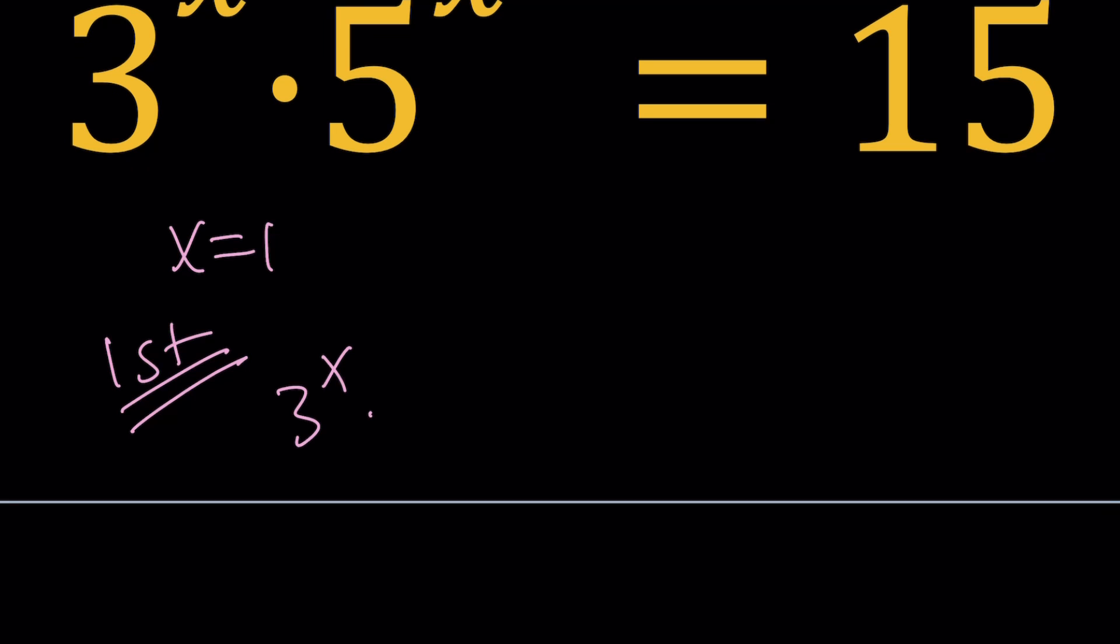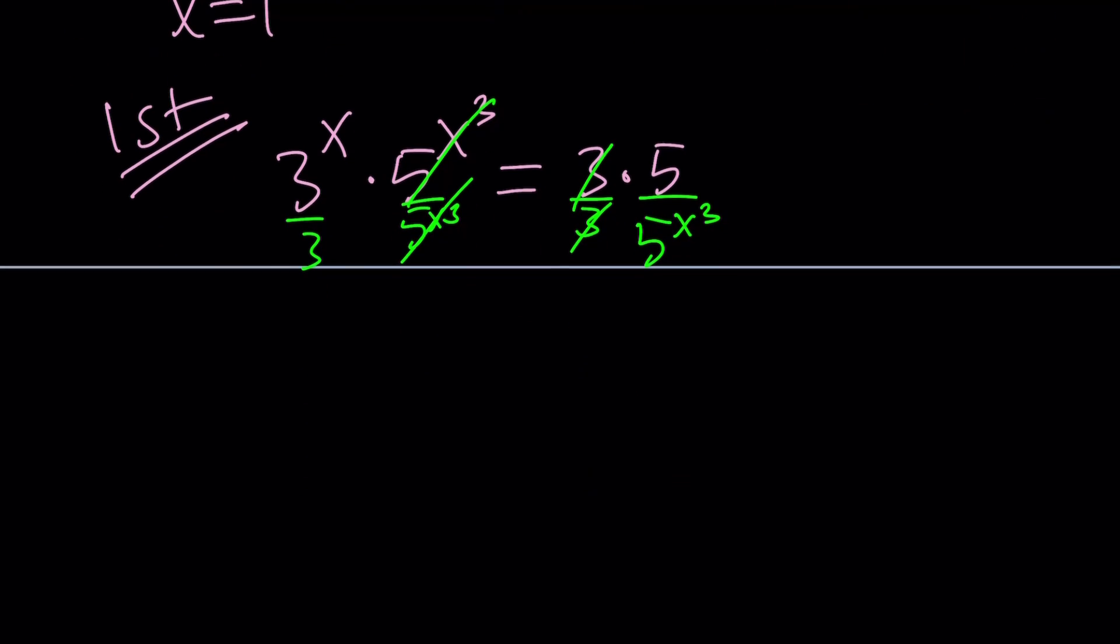So I'm going to use the properties of exponents and write the 15 as 3 times 5. And then I want to put the 3's together on one side and 5's on the other side so that I can use the properties of exponents and compare these two exponentials. So let's divide both sides by 3 here, that's going to give us a 1, and divide by 5 to the power x cubed here, and this is going to give us 1. So now we end up with 3 to the power x minus 1 equals 5 to the power 1 minus x cubed.